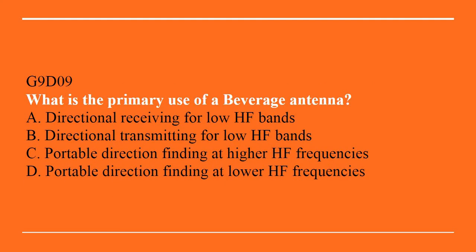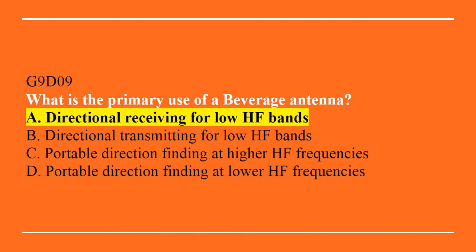G9D09: What is the primary use of a beverage antenna? A. Directional receiving for low HF bands. B. Directional transmitting for low HF bands. C. Portable direction finding at higher HF frequencies. Or D. Portable direction finding at lower HF frequencies. The answer is A, directional receiving for low HF bands.